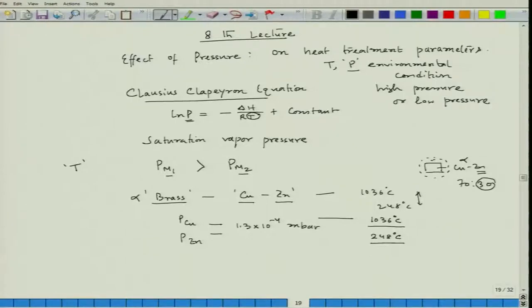To prevent this, since zinc evaporation cannot simply be stopped — it must maintain its saturation vapor pressure — one option is to perform heat treatment at a lower temperature. However, we cannot go too low because the kinetics would be very slow and the desired heat treatment result would require much more time. So we cannot rely on low temperature alone.